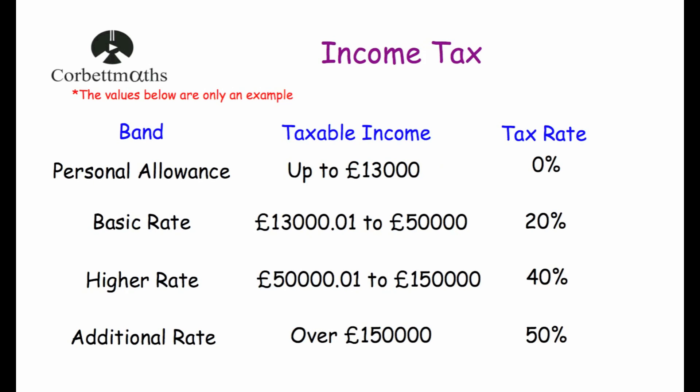Here's an example of some tax rates and we've got four bands. We've got a personal allowance which means that up to £13,000 the tax rate is 0%, so if somebody earns up to and including £13,000 they'll pay no income tax at all. Then there's the basic rate of tax for people that earn between £13,000 and a penny up to £50,000, and they'll pay 20% on the amount of money over £13,000. So if they earn £14,000, on the first £13,000 they'll pay no tax, and on the next thousand they'll pay 20%.